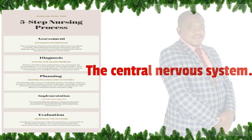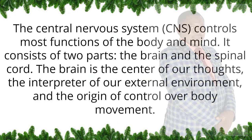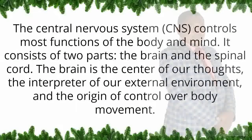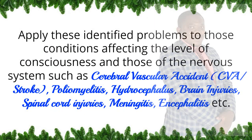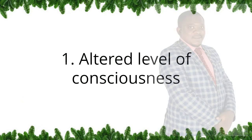The Central Nervous System (CNS) controls most functions of the body and mind. It consists of two parts: the brain and the spinal cord. The brain is the center of our thoughts, the interpreter of our external environment, and the origin of control over body movement. Apply these identified problems to those conditions affecting the level of consciousness and those of the nervous system, such as cerebral vascular accident (CVA/stroke), poliomyelitis, hydrocephalus, brain injuries, spinal cord injuries, meningitis, encephalitis, etc.